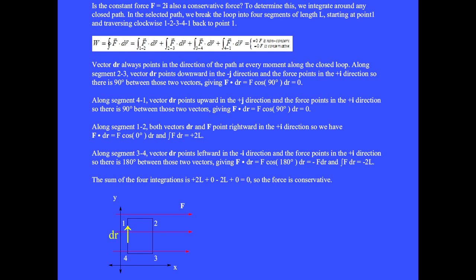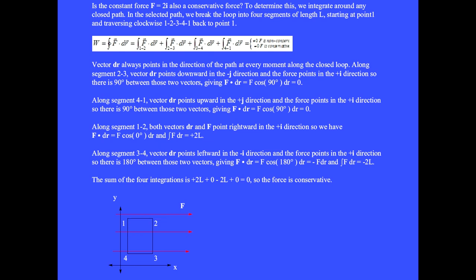Along segment 1-2, both vectors dr and F point rightward in the plus i-hat direction, so F dot dr equals F cosine(0) dr, and the integral of F dot dr equals plus 2L. Along segment 3-4, vector dr points leftward in the minus i-hat direction and the force points in the plus i-hat direction, giving a 180 degree angle between them, so F dot dr equals minus F dr and the integral equals minus 2L. The sum of the four integrations is plus 2L plus 0 minus 2L plus 0 equals 0. So the force is conservative. The upper and lower segments cancel in this constant force F equals 2 i-hat.